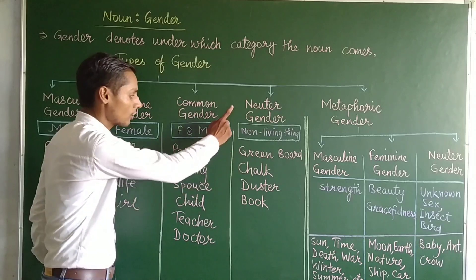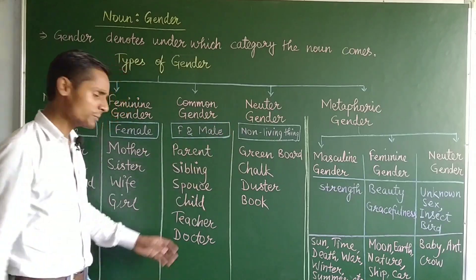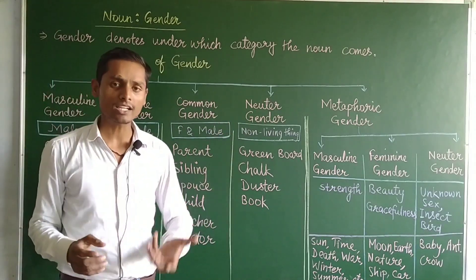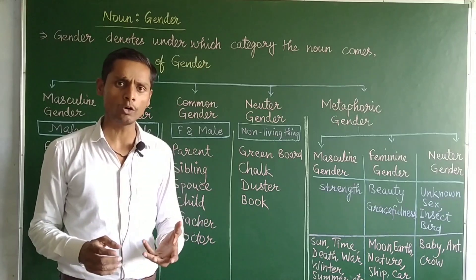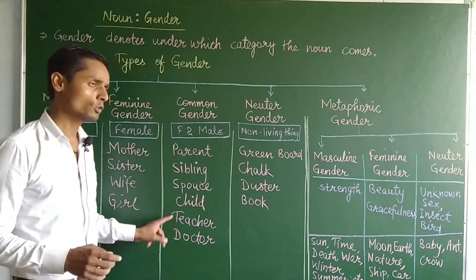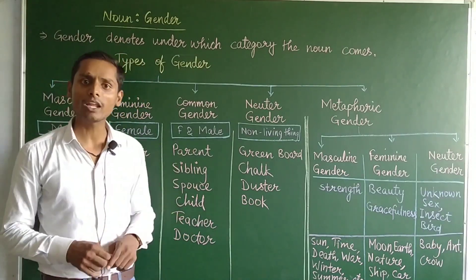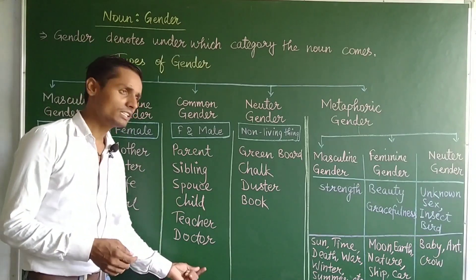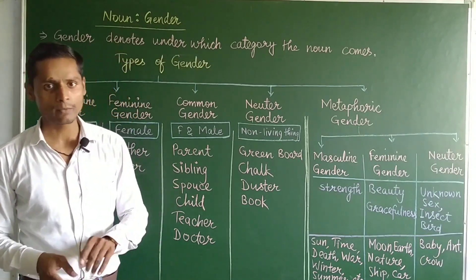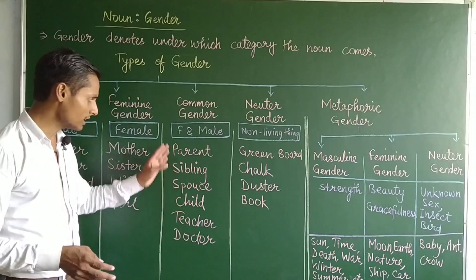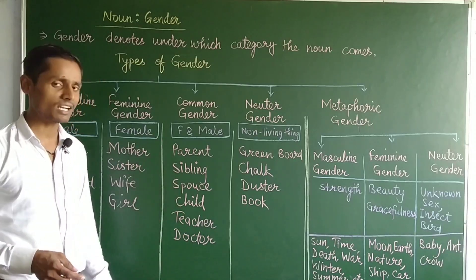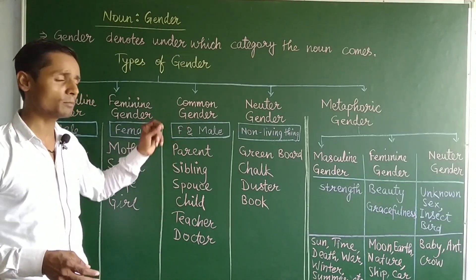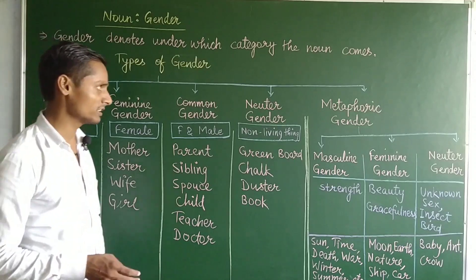When we don't know the sex or gender of a person, we call it common gender. For example, 'teacher' can refer to both a male and a female teacher. Similarly, 'doctor' can be both male and female — so these are common gender.